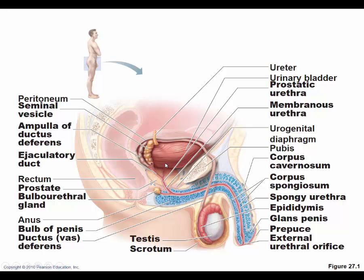The prostate gland is just below the bladder, and the urethra passes through it — we call this the prostatic urethra. As it passes toward the pelvic wall, we have the membranous urethra and then the penile urethra. Only in the male reproductive tract do we see a common passageway for both semen and urine. Accessory glands include the seminal vesicles, the prostate gland, and the bulbo-urethral gland.